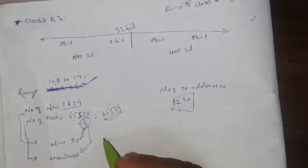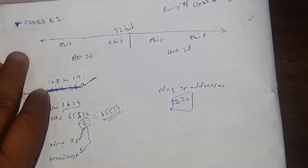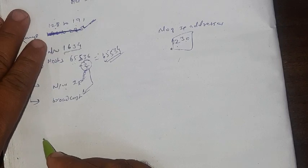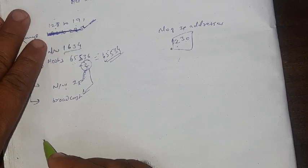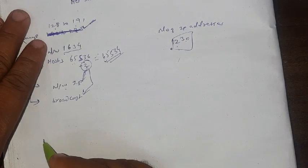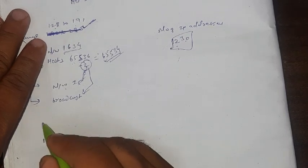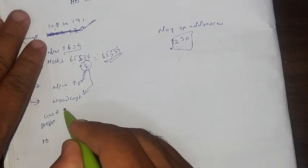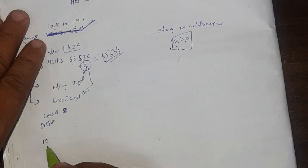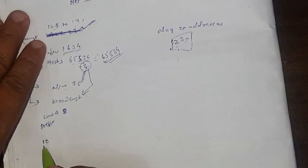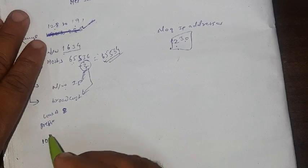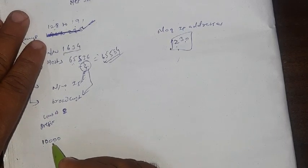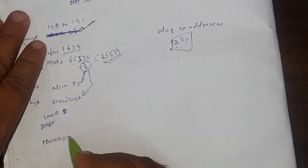Now see here, suppose if we are dealing with Class B IP address, then here the first octet, that is in the first octet, there are two bits that are fixed means prefix. In Class A, the first one bit is prefix, that is 0. In Class B, the first two bits are prefix, that is 1 0. The rest of the bits are any combination of 0s and 1s.